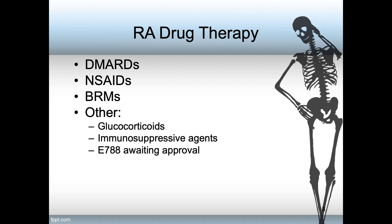It was once thought that celecoxib, or Celebrex, should be used rather than older NSAIDs. However, these COX-2 inhibiting drugs have been associated with cardiovascular disease such as MI, and have been taken off the market. Biological response modifiers, or BRMs, are a new class of disease-modifying drugs that help reduce the signals for the immune system to cause inflammation. Other medications also work to reduce the immune response, including glucocorticosteroids, other immunosuppressive agents, and yet another immunosuppressive agent known as E788, which at this time continues to await approval by the FDA.